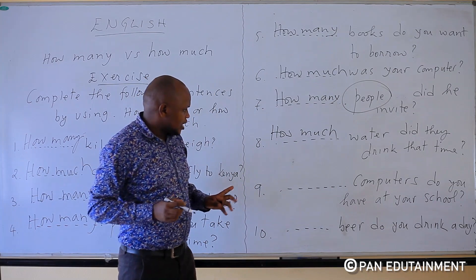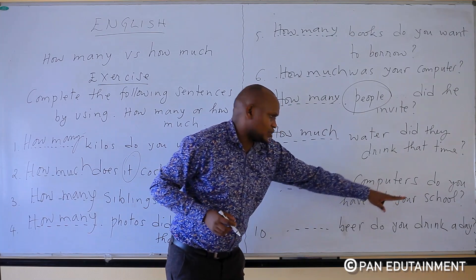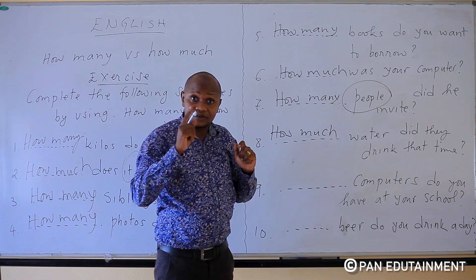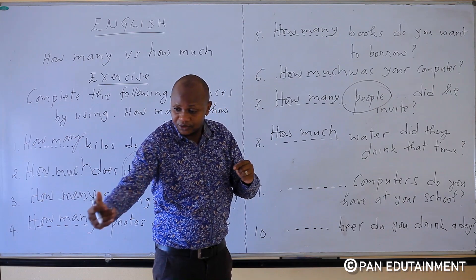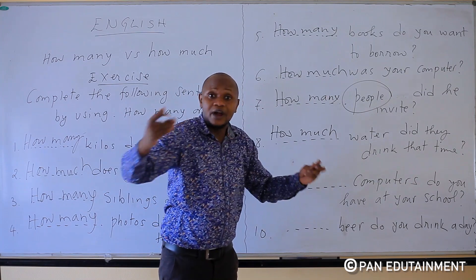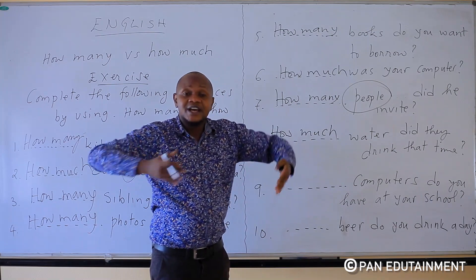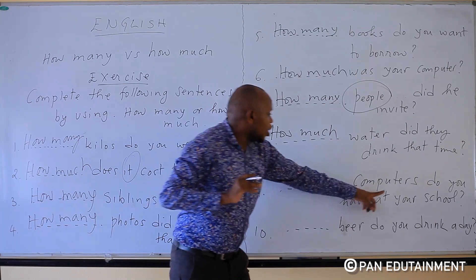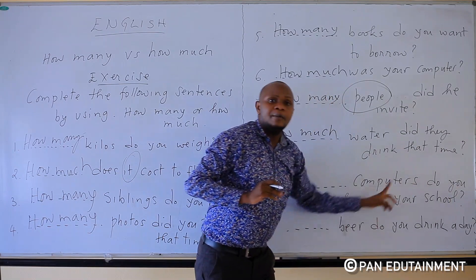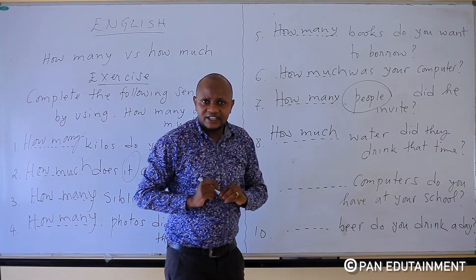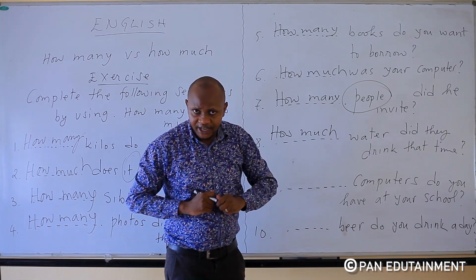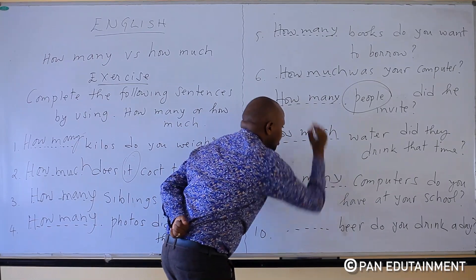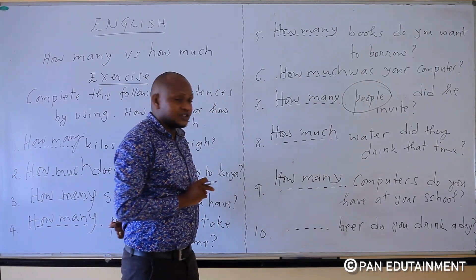Number nine: blank computers do you have at your school? Computers — we can count computers: 1 computer, 2 computers, 3 computers, 100 computers, 1 million computers. That's why we put how many. How many computers do you have at your school?